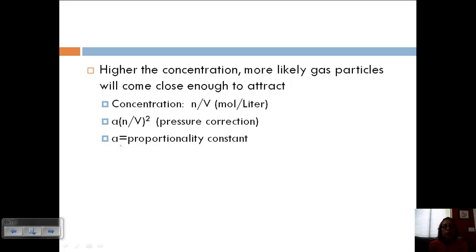So the higher the concentration, the more likely the gas particles will come close enough to attract. And so we know concentration is equal to moles per liter, so N over V in this case. And so we need to correct for that pressure difference, that lower pressure. And so we use A, which is our proportionality constant, just like B. You can look it up in a textbook. And so we have A times our concentration squared. So this gives us a final equation with all of our corrections for volume and pressure. The observed pressure is equal to NRT over V minus NB minus A times N over V squared.